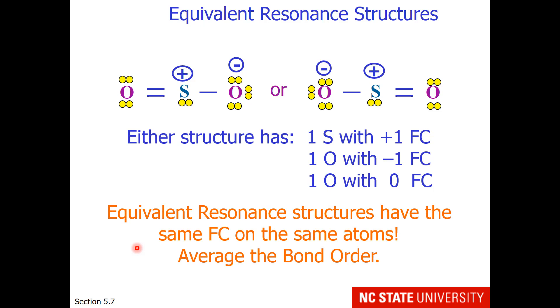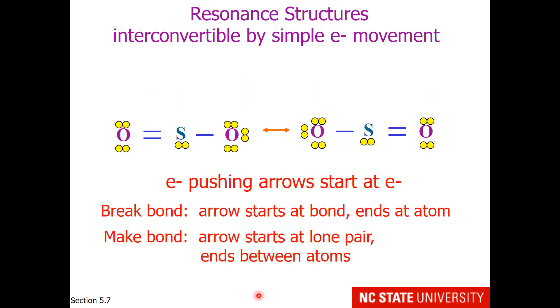So when a structure on paper has equivalent resonance structures, the appropriate thing to do is to average the bond order. Another way to recognize resonance structures is they are interconvertible by simple electron movement.